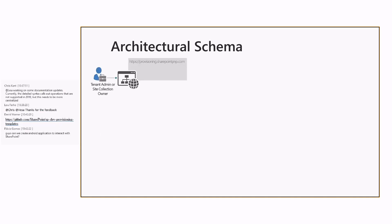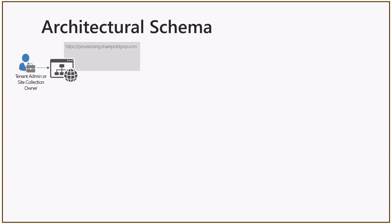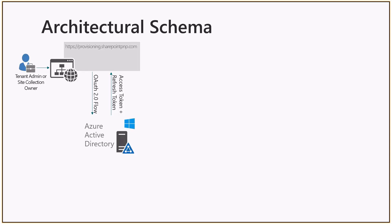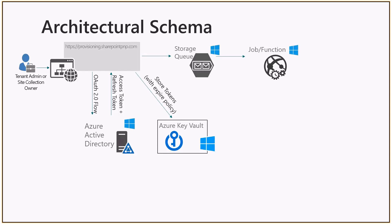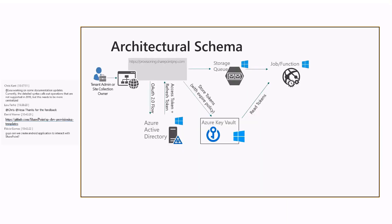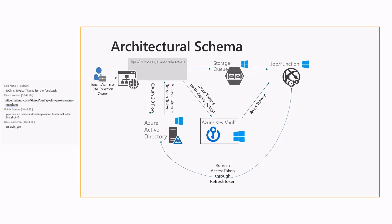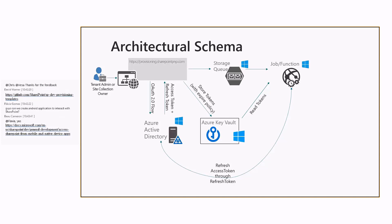From an architectural perspective, we have: the provisioning.sharepointpnp.com website where you log in; Azure Active Directory authenticates your user and, through the OAuth 2.0 flow, we obtain an access token and a refresh token. We store those securely in Azure Key Vault. When you request to provision a site, we store a message in an Azure Storage Queue, which is picked up by a job or function that reads the tokens from Key Vault, and if needed, refreshes the access token using the stored refresh token.